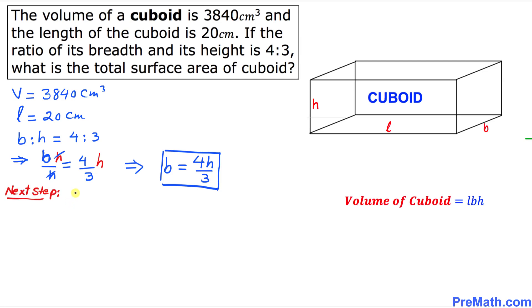Now the next step: we know that the volume formula for the cuboid is V equals L times b times h. Let's fill in the blanks. We know the volume is 3840 equals length, which has been given to us, is 20.